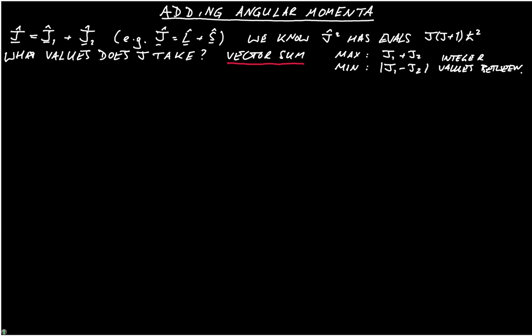So we now know what values j takes on. We can see that, as usual, mj, the z projection of j will lie between plus j and minus j, again with integer values in between. And we can define jz is j1z plus j2z.